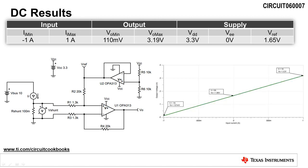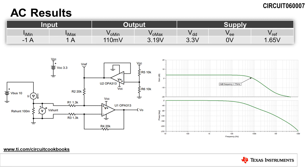In this simulation, a DC sweep of the input current from negative 1 amp to 1 amp yields an output voltage from 121 millivolts to 3.2 volts centered around the reference voltage of 1.65 volts. This verifies the functionality of the circuit. Running an AC sweep analysis, we find that the bandwidth of the circuit is 77 kilohertz.